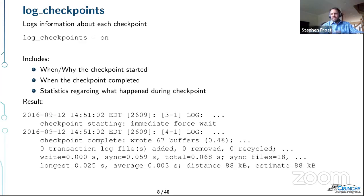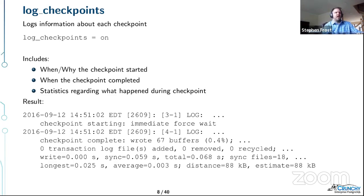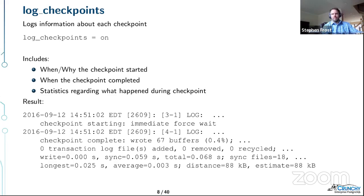Next is log_checkpoints. The database does other things while you're running queries, and you want to know if something else was happening that caused slowness. Checkpoints are one of those things. Enabling log_checkpoints helps you determine whether there's a correlation — was the problem a checkpoint, or is the query slow on its own? You get lots of useful information that also appears in your PG Badger report.